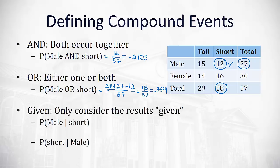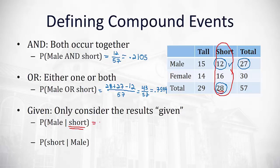A third type is the given probability, where we only consider the results given to us — the given condition comes after the vertical bar. For the probability of male given short, we only look at the short column, reducing the total from 57 down to 28. Of the 28 short people, 12 are male, giving 12 out of 28, or 0.4286.